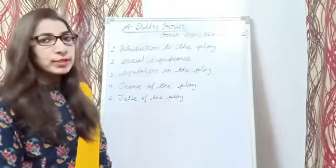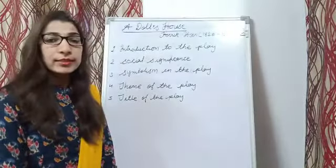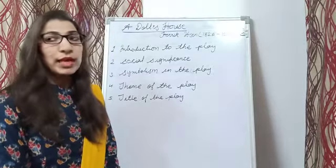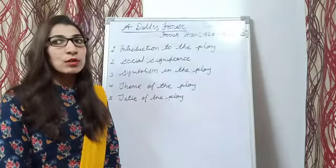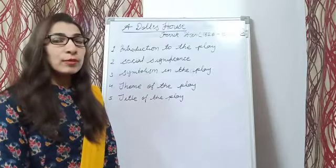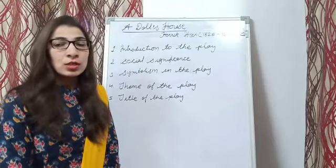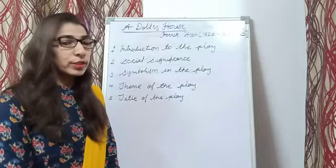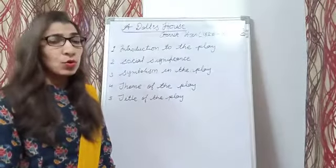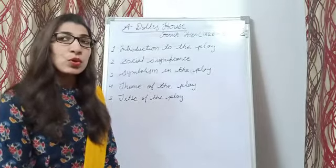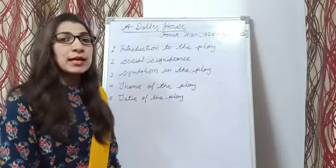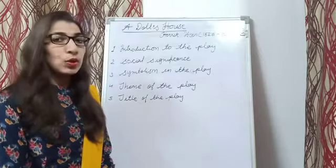This first of all is the introduction of the play. This play was written in the year 1879 when Ibsen was 51 years old and he was living in Rome. In Rome, there was so much controversy on the issue of women's rights and there were many reformation movements for women's rights. Hendrik Ibsen's own wife, Kamina, was also involved for the cause of women's rights and it inspired him to write this play.